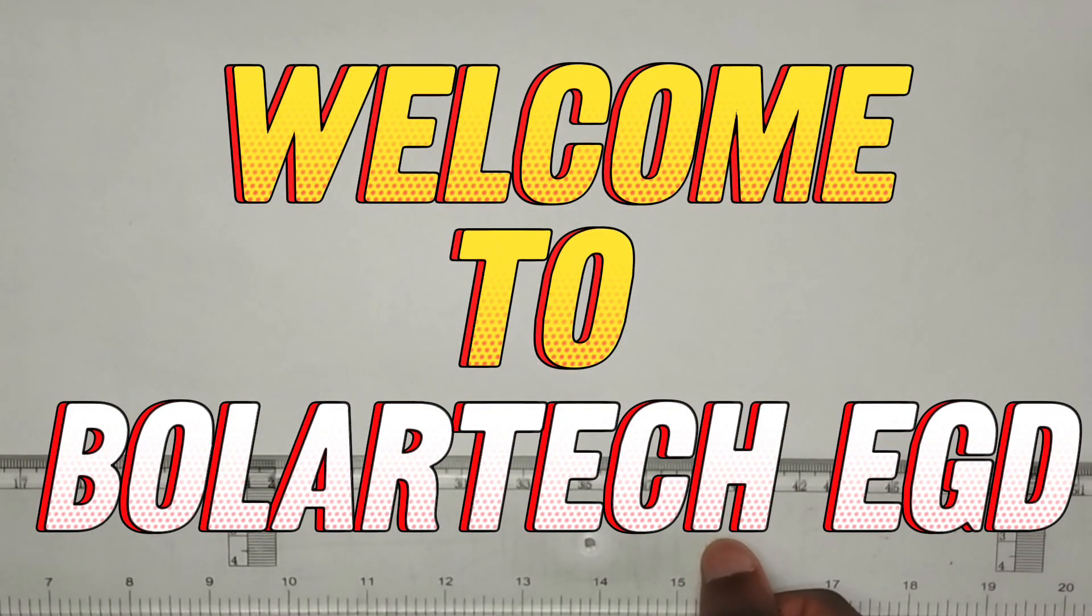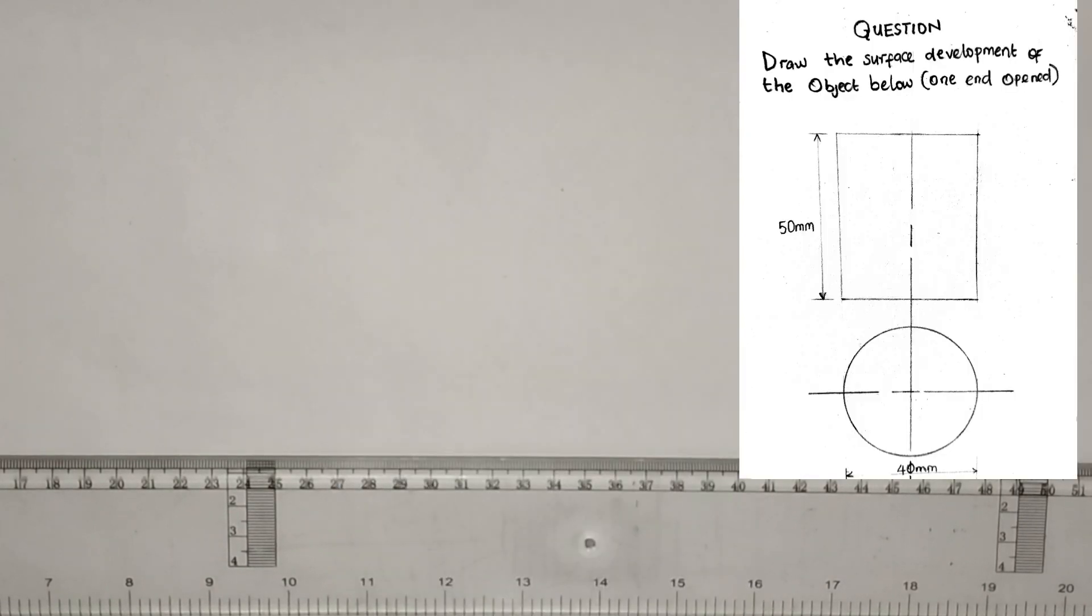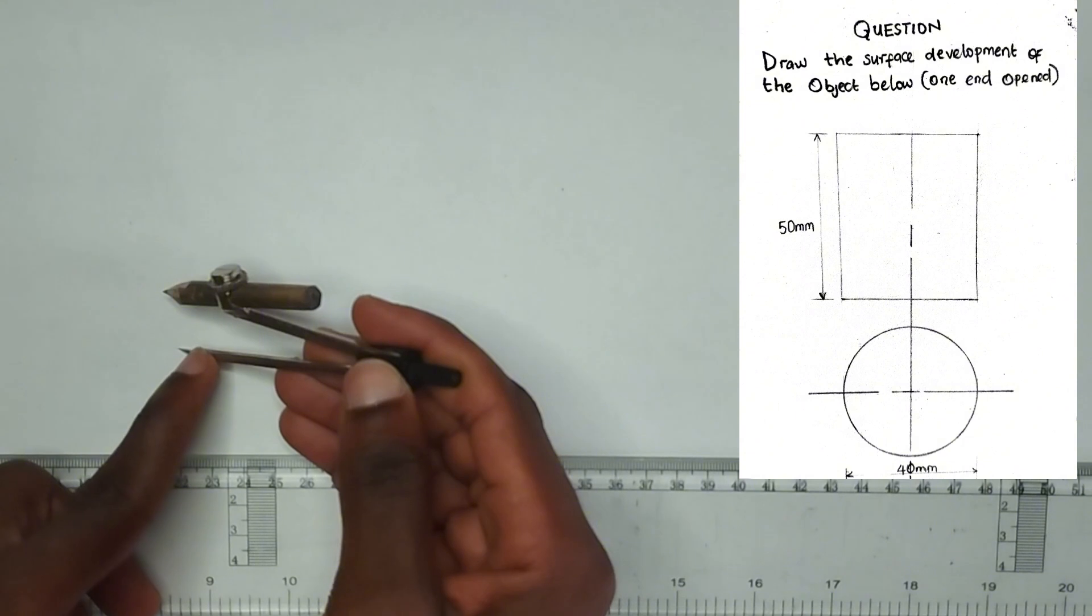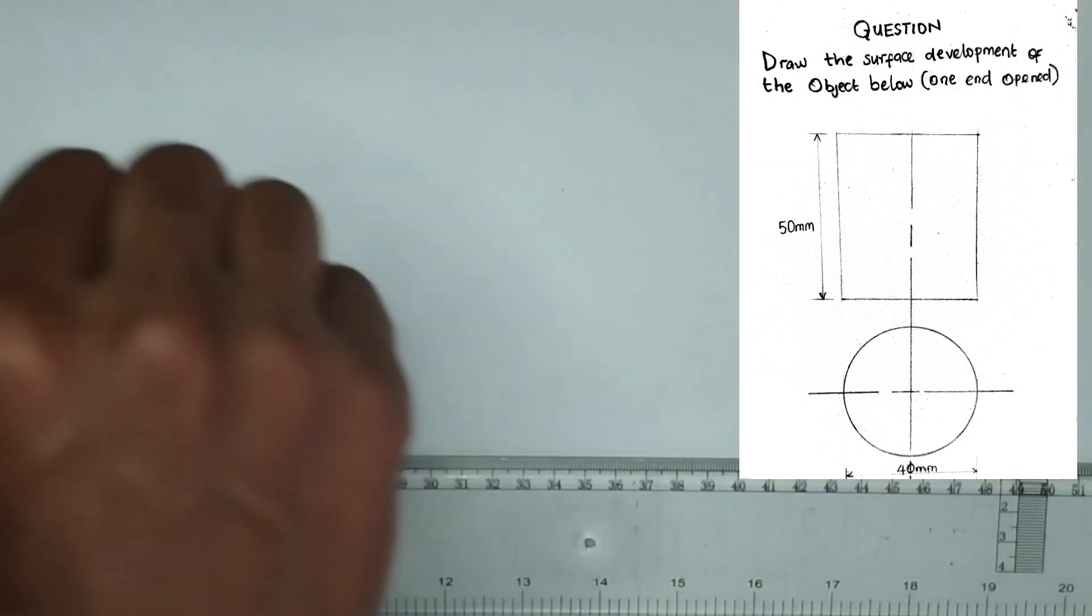Welcome back guys. In this video we have been given a question to draw the surface development of the object below, that is one end opened, that is a cylinder. First of all, what we are going to be doing is to draw the plan which is the circle. So we have been given the diameter of the circle to be 40mm.